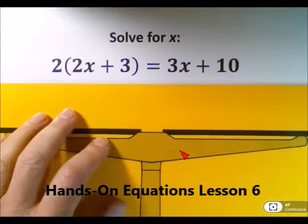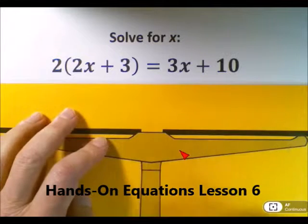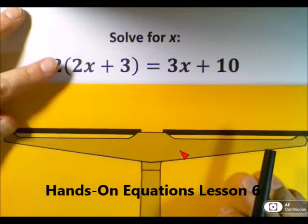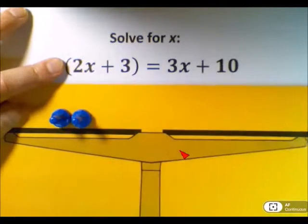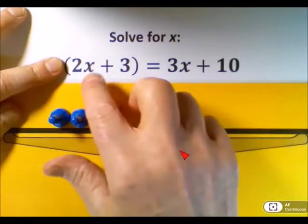Let's look at this equation from Lesson 6 of Hands-On Equations. The first thing we will do is cover the number outside the parentheses and set up what is inside the parentheses, namely 2x's plus 3.